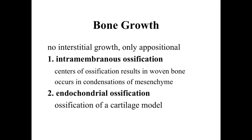When we take a look at bone growth there are two generalizations to keep in mind. The first is that there's going to be no interstitial growth. Cartilage has a relatively flexible matrix allowing interstitial growth — isogenous groups of cells dividing and expanding the structure from the inside. Bone, because of its very hard inorganic matrix, cannot expand from the inside, so there is no interstitial growth.